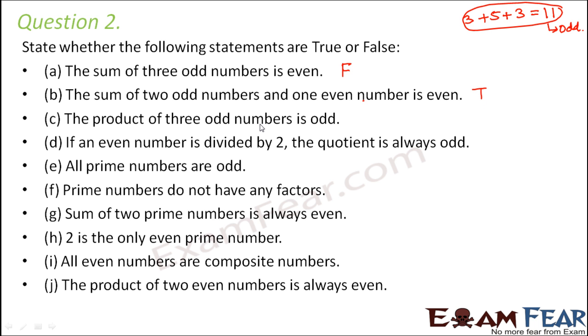Product of three odd numbers is odd. Now let us take examples. Let's consider 3, which is an odd number, multiplied by say 5, which is an odd number, multiplied by another odd number 7. So how much would be the answer? It would be 15 into 7 which is 105 that is also an odd number. So if you want you can try these with a few other sets of odd numbers and you would see that this is true.